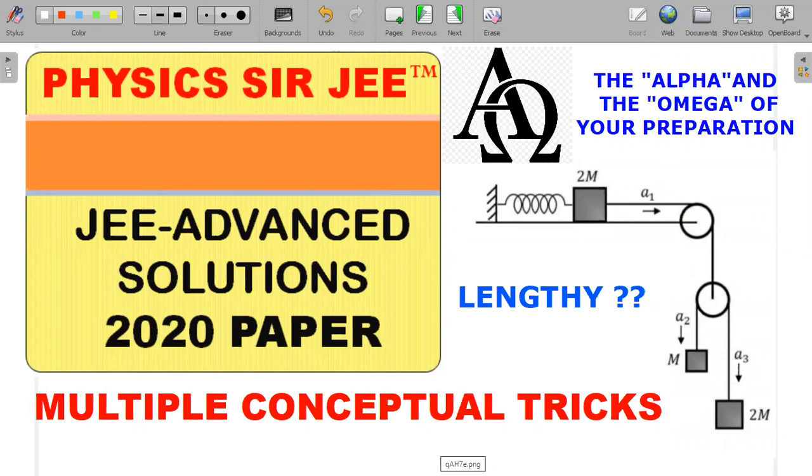I always believe that students are supposed to finish their JE Advanced previous year's solutions in order to have an upper hand over others. You can see at the top of the screen, I have written this is the alpha and the omega of your preparation, the beginning and the end of your preparation. Whatever you do, if you don't do the previous exam papers and prepare for your exam, then it would not be a complete preparation.